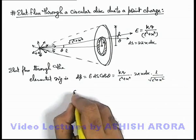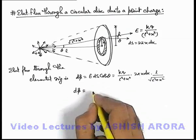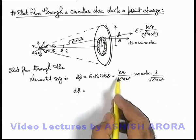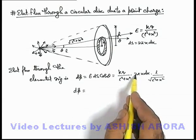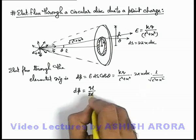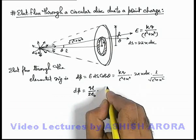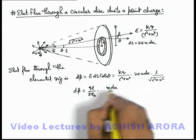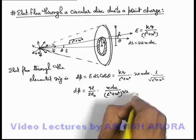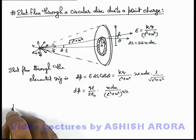So this dφ can be written as, here we can write k as 1 by 4π epsilon not, out of which 2π gets cancelled out. So this will be ql by 2 epsilon not multiplied by x dx by (l square plus x square) to power 3 by 2.